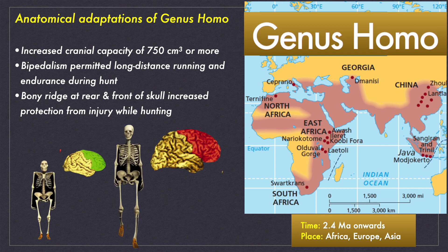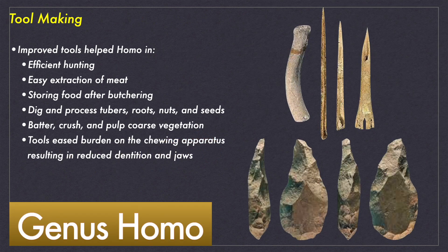The out-of-Africa migration was a slow process that started with Homo erectus and continued for almost 2 million years. The species of the genus Homo underwent anatomical adaptations including increased cranial capacity and morphological changes to the face, pelvis, arms, legs, hands and feet. The brain capacity of all Homo species was 700 cubic centimeters or more. Changes to the pelvis, foramen magnum and the bones of legs, feet and arms made them efficient bipedals. The bony ridges at the front and rear of the skull protected them from serious brain injury on a fall. Walking on two feet freed their hands, and this combined with increased brain power enabled them to devise tools out of stone, wood and animal bones. The tools made them superior hunters, and were also used for extracting meat and bone marrow from dead animals, crushing seeds, breaking hard nuts and extracting tubers from the ground.